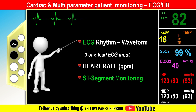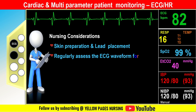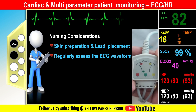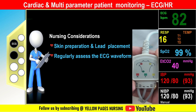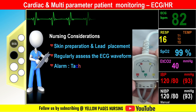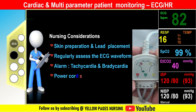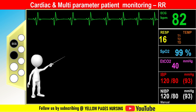Nursing considerations for ECG: prepare the skin and connect the leads properly as recommended. For a three-lead setup, follow the direction of placement indicated on the connector, and connect the other end to the monitor. Regularly assess the ECG waveform for signs of arrhythmias or abnormalities. For heart rate alarms, tachycardia above 120 beats per minute or bradycardia below 60 beats per minute requires prompt action and informing the doctor. Ensure the power cord is always connected.